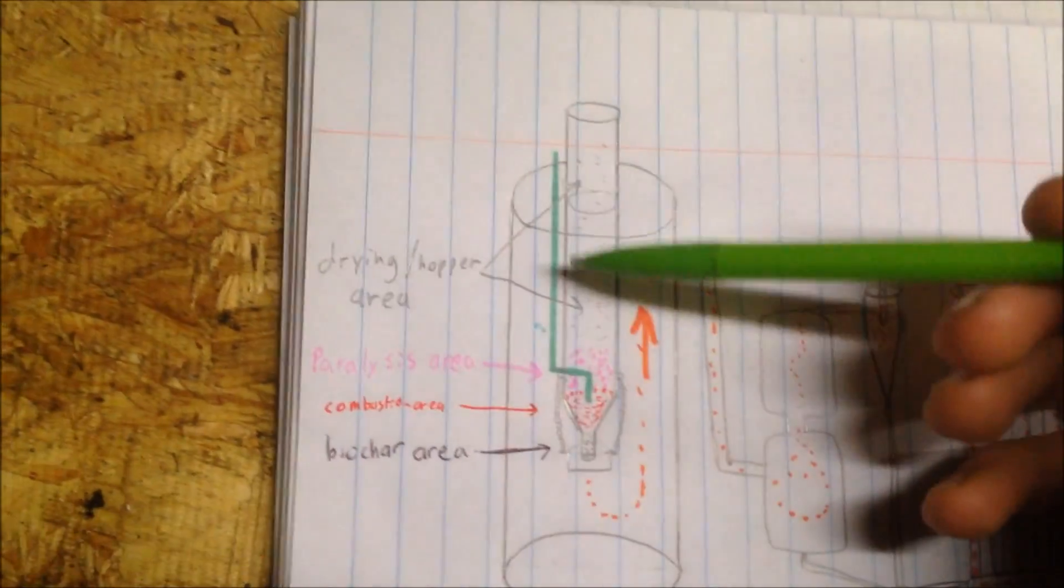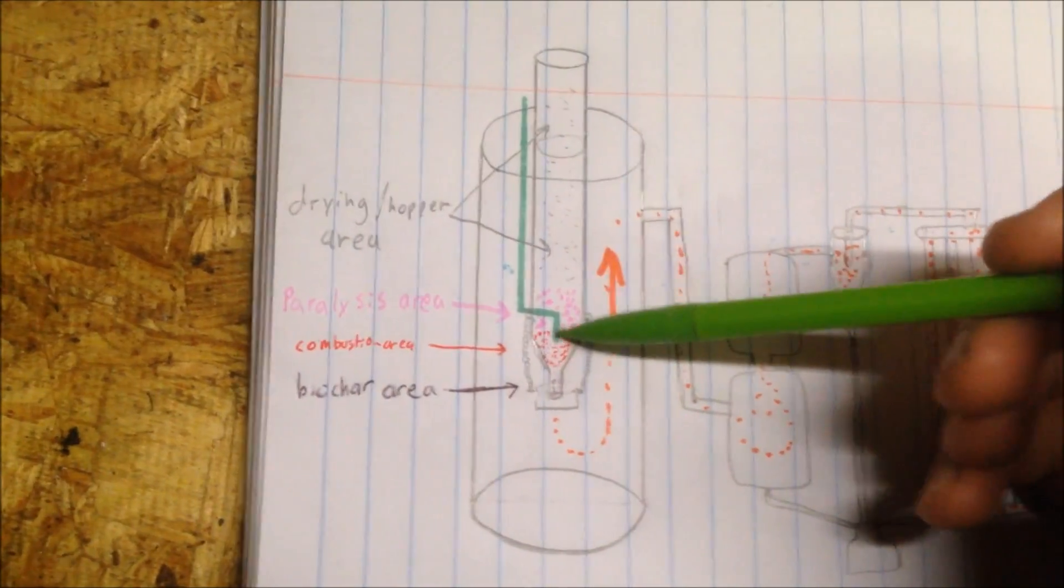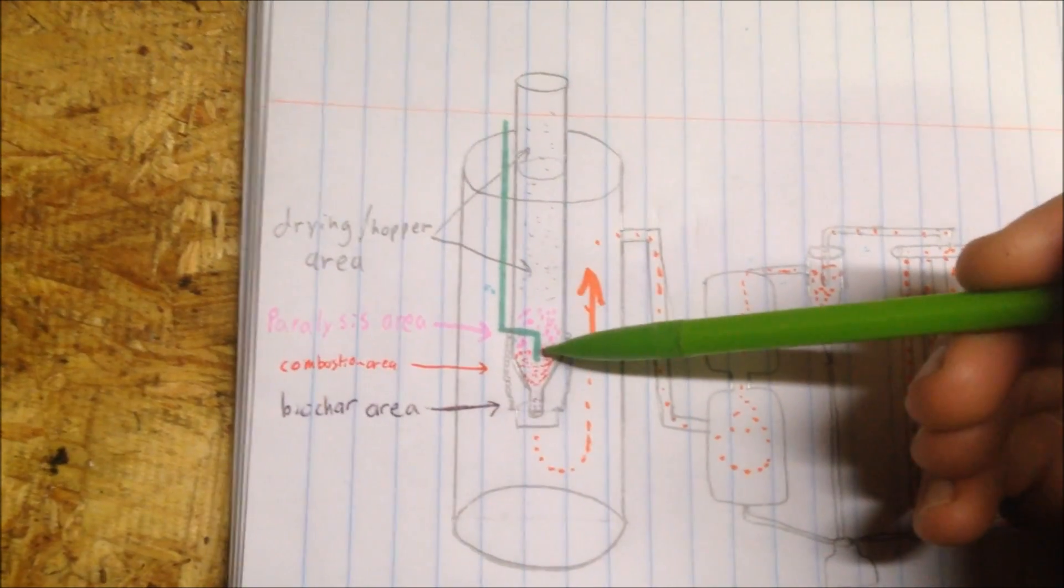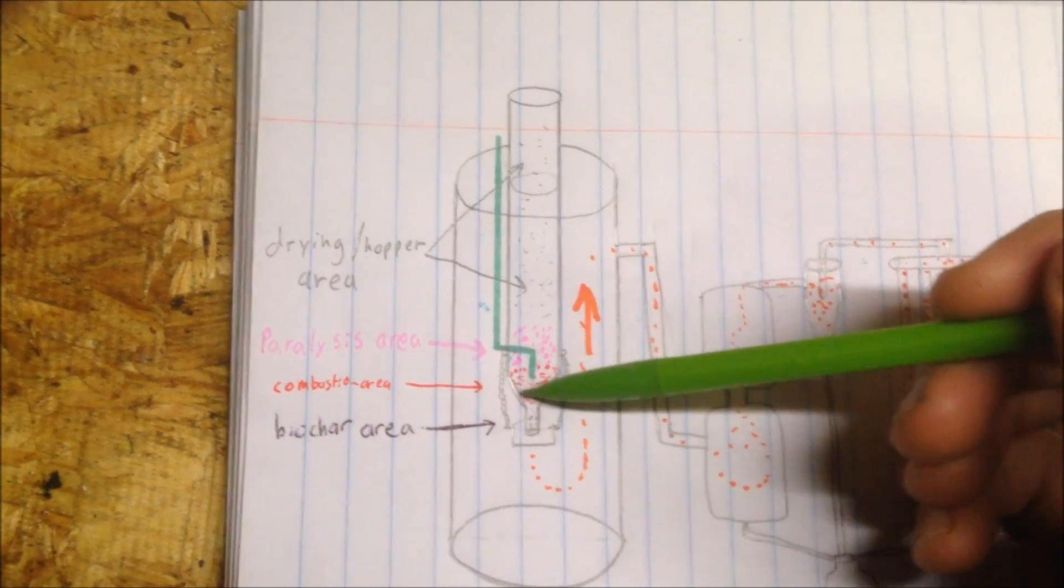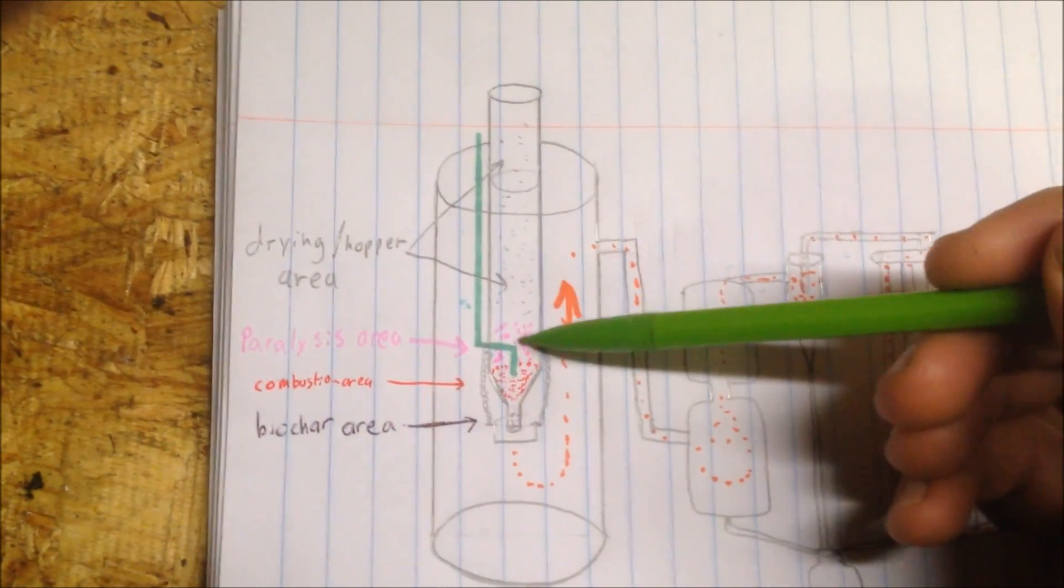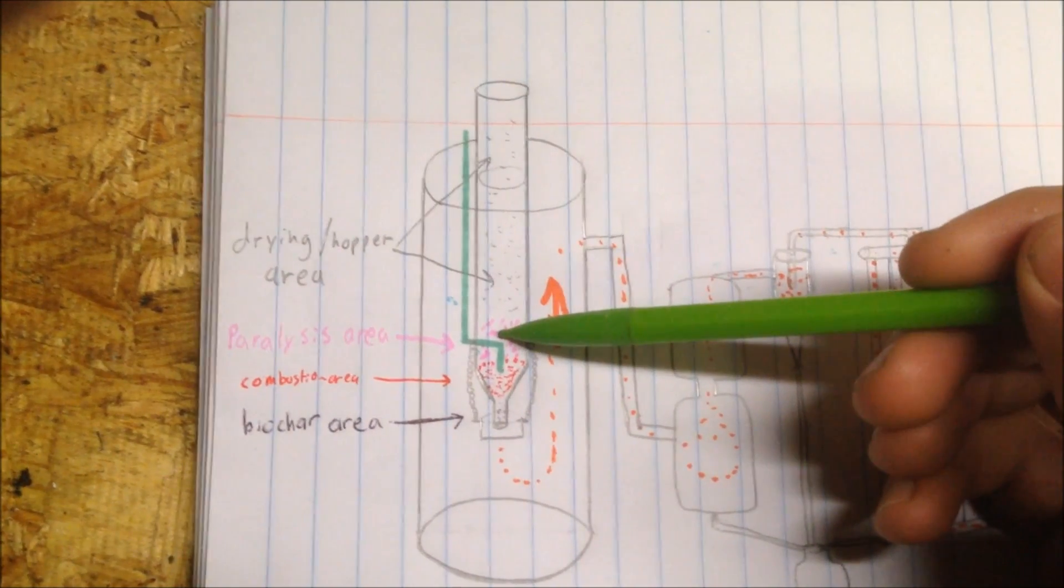This here will be the drying hopper. Fill it full of wood and then it'll come down here to where the air comes in - this green line or this blue line - and right here will be the combustion zone. Right here is where the heat from the combustion zone heats up the wood and this is called the pyrolysis zone.